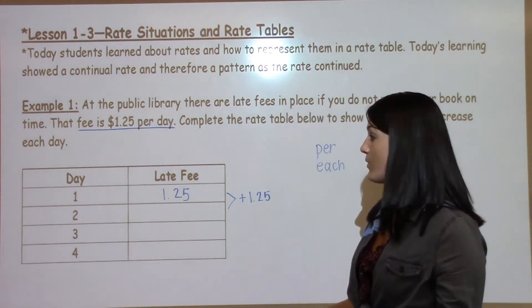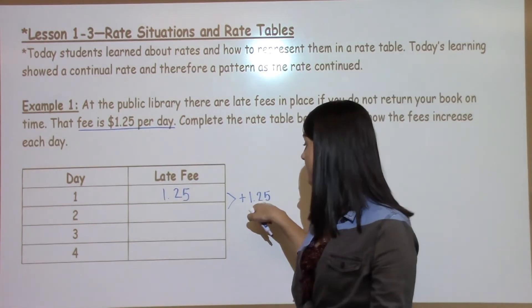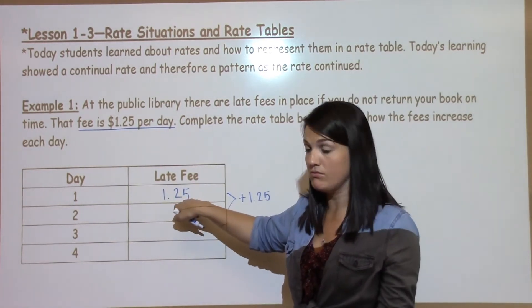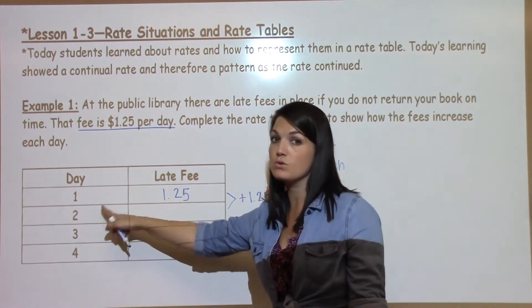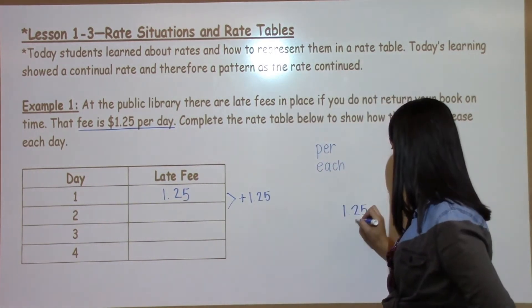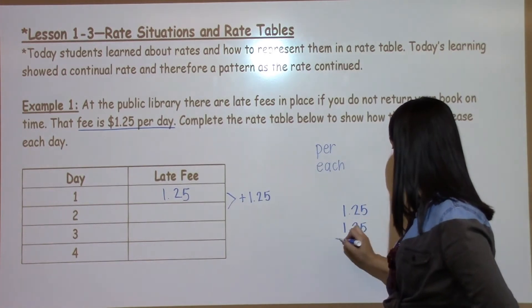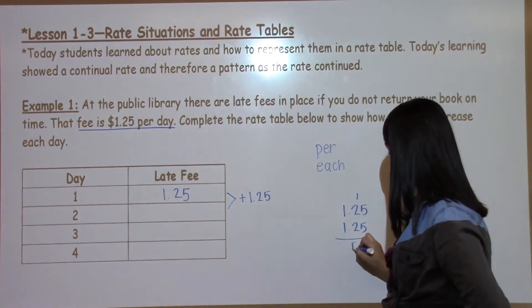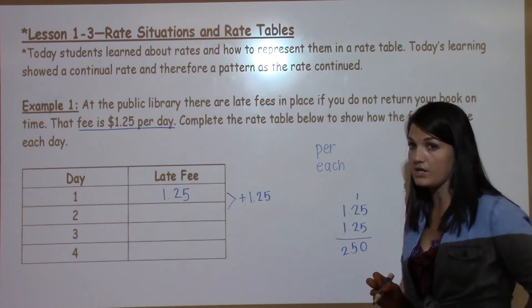I can do this a couple of ways. I can take $1.25 plus $1.25 or I can take $2 times $1.25. Either way you should get the same answer of $2.50.